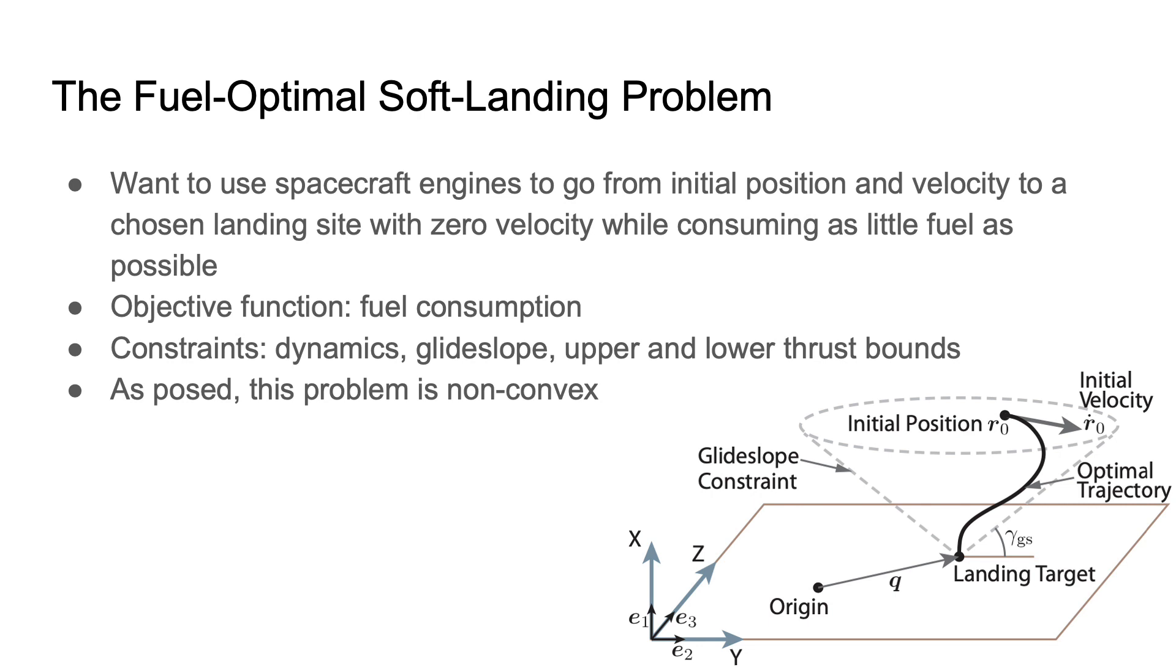We also have a number of constraints, including dynamics constraints, which ensure that the trajectories that are generated behave according to the laws of physics, a glide slope constraint, which ensures that the lander stays within a cone whose apex is at the landing site. This constraint is in place to prevent the spacecraft from translating too close to the ground where there could be boulders or other obstacles. There are also an upper and lower throttle bound on the propulsion system. Since the propulsion system has a maximum thrust it can generate, we can't exceed that. But also, this system has a minimum thrust, so it can't generate thrust beneath a certain amount if we want it to maintain combustion stability.